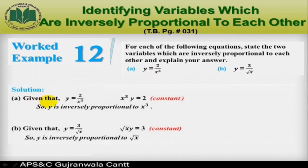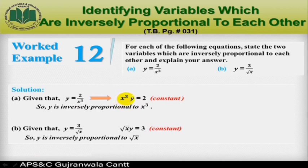In part (a), given that y = 2/x³, by cross-multiplying we can write it as x³y = 2, where 2 is a constant. We see the product of x³ and y equals the constant k = 2, which is not equal to zero. So we can say y is inversely proportional to x³.